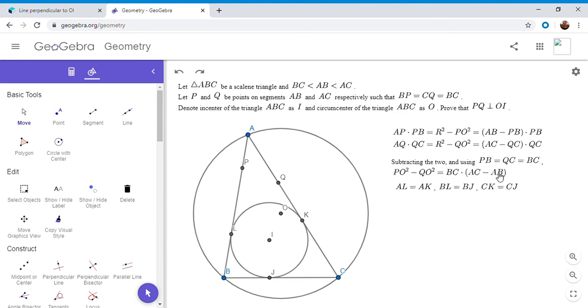So AC minus AB. If we break AC and AB up into their components, we have AC minus AB. AC is AK plus KC, and AB is AL plus LB. But AK is equal to AL, so those two cancel, and this has to be equal to KC minus LB. And KC is equal to CJ, and LB is equal to BJ. So KC minus LB is just CJ minus JB.